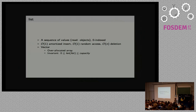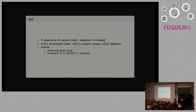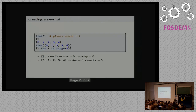And so how does CPython do that? Internally, they use something called a vector, which is an over-allocated array. So even though your list may have, say, five items, it's possible that it has space for, say, eight items, actually. And so the invariant that the vector must comply to is that the actual length of the list has to be lower than the actual capacity.